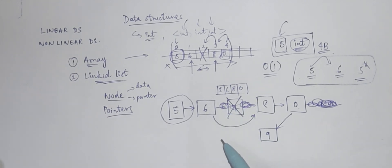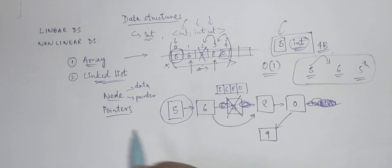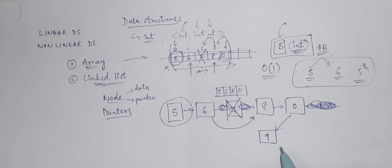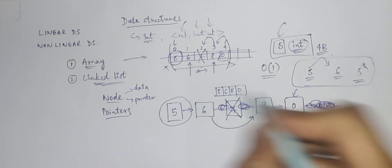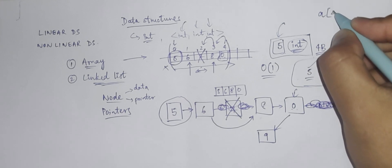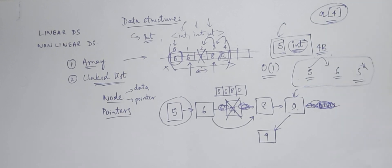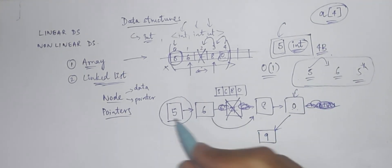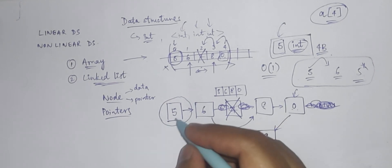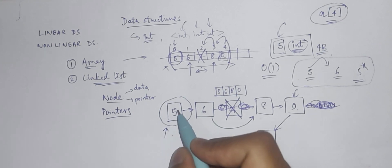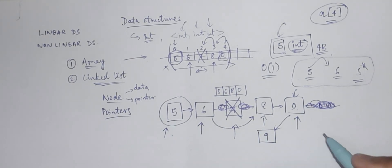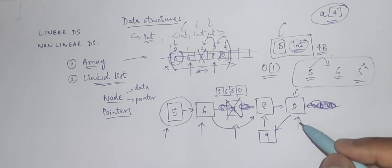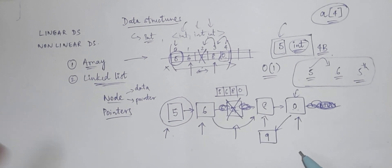Insertion and deletion in linked lists is very easy compared to arrays. But if you want to access the last element, unlike arrays where you simply provide the index for constant-time access, in a linked list there is no index. You have to start from the very first node and traverse the entire linked list to reach your target element. Traversing to access is the only way to reach any node in a linked list, and that is one drawback.